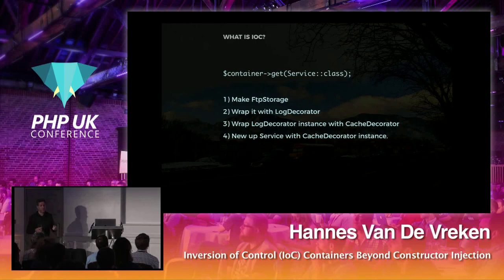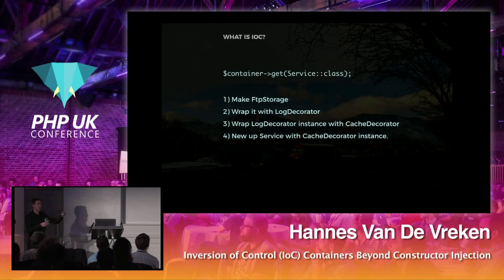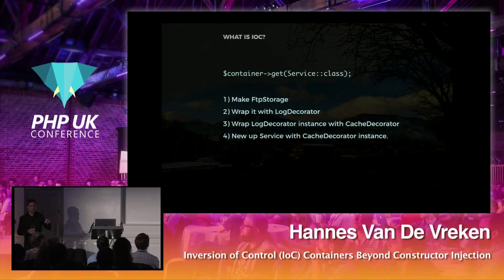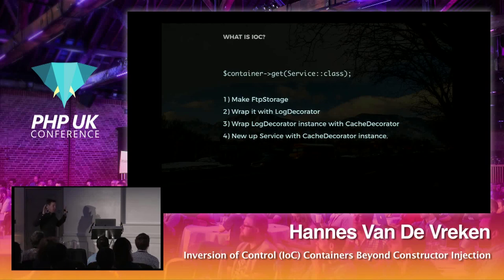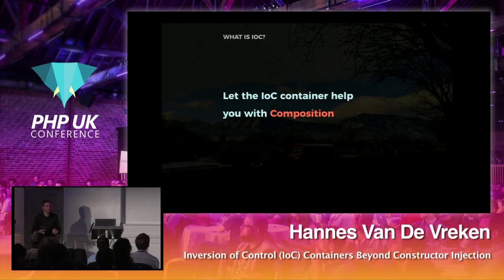When we use a container and say get me a service class object, it's going to look up what needs to be done to create it. First it creates the FTPStorage class, then wraps it with the log decorator, then the cache decorator, and then injects the cache decorator instance — which is wrapping all the other instances — into the service class. The object injected is actually the cache decorator, not the FTPStorage. But because the cache decorator implements the storage interface, the service class doesn't care. That's IOC: inversion of control helps you compose all these objects.